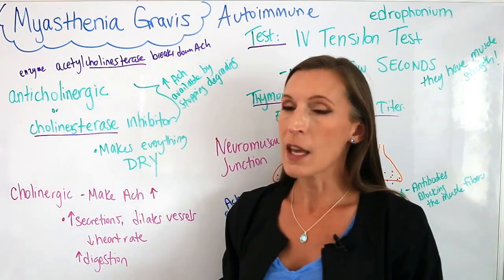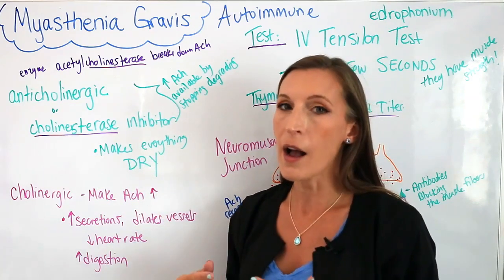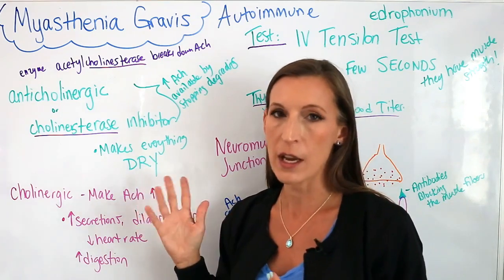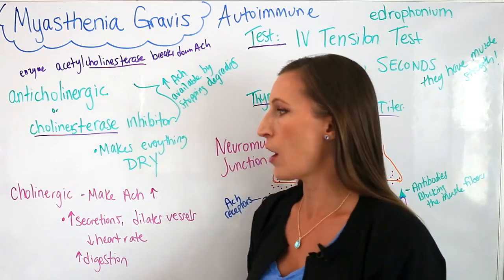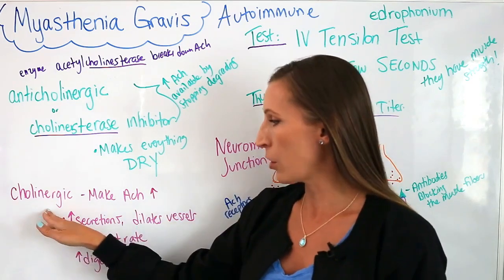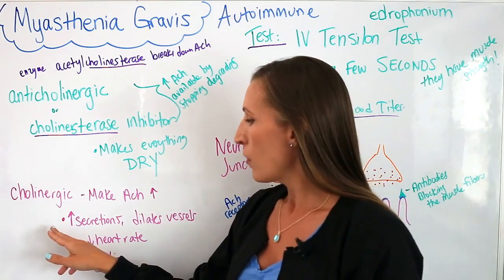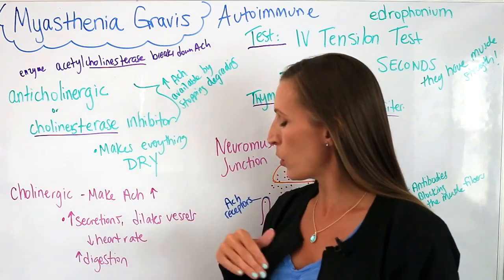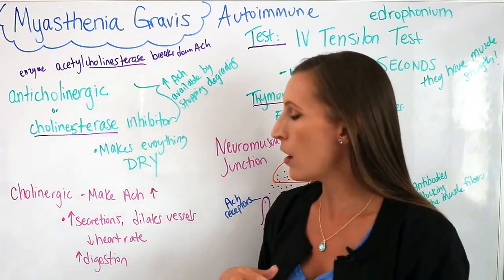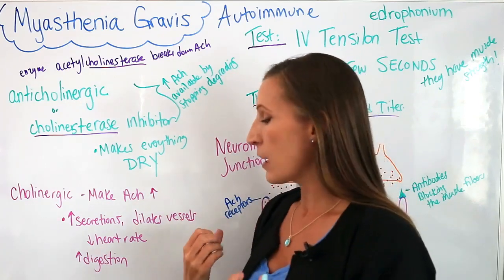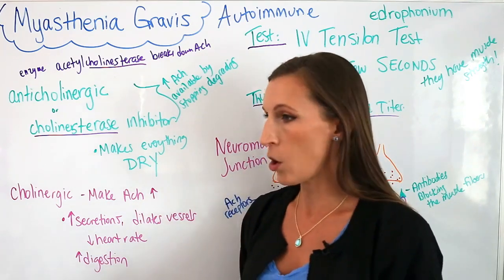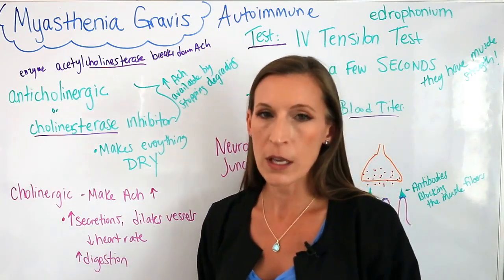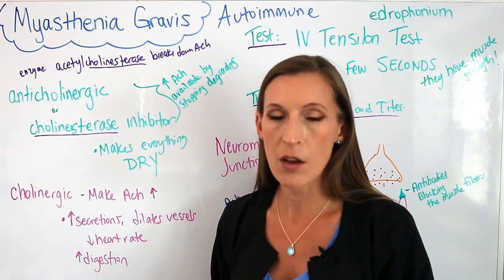Note that anticholinergic drugs make everything dry — dry eyes, constipation, dry mouth. Those are major side effects. On the opposite end, cholinergic drugs make more acetylcholine. They work with the parasympathetic nervous system and increase secretions, increase saliva, dilate vessels, decrease heart rate causing bradycardia, and increase digestion, which can cause muscle cramps and spasms.